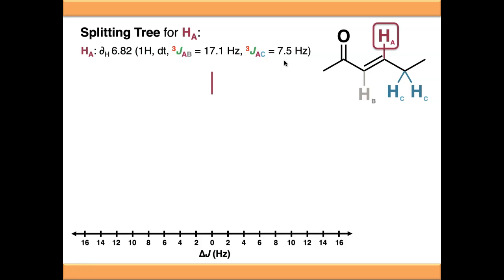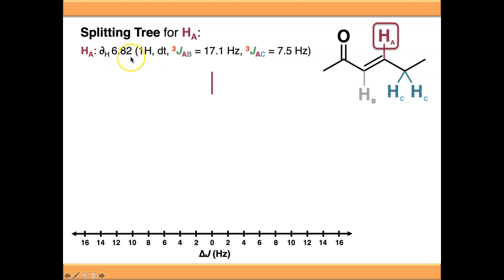If we start out with our uncoupled signal for A, notice that the x-axis down here is in delta J. This is measured in Hertz and it's basically going to reflect the magnitude of our J values - notice it's not in chemical shifts. The chemical shift of this signal is given up here as 6.82. So when you're seeing this signal on the actual NMR spectrum, the center of this signal will be at 6.82, and the magnitude of the J values is given in Hertz.